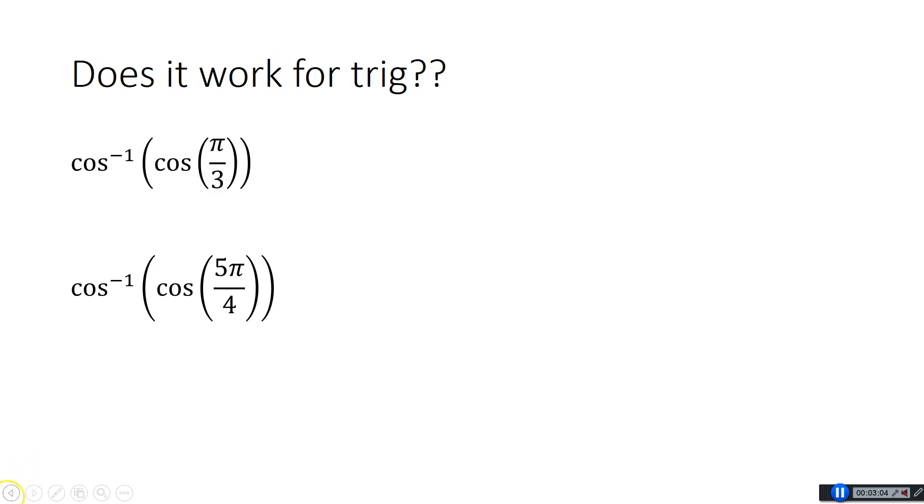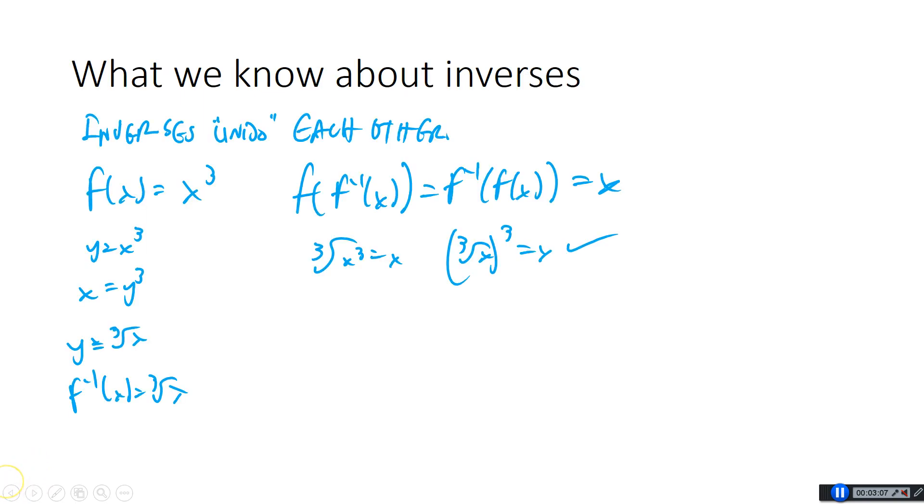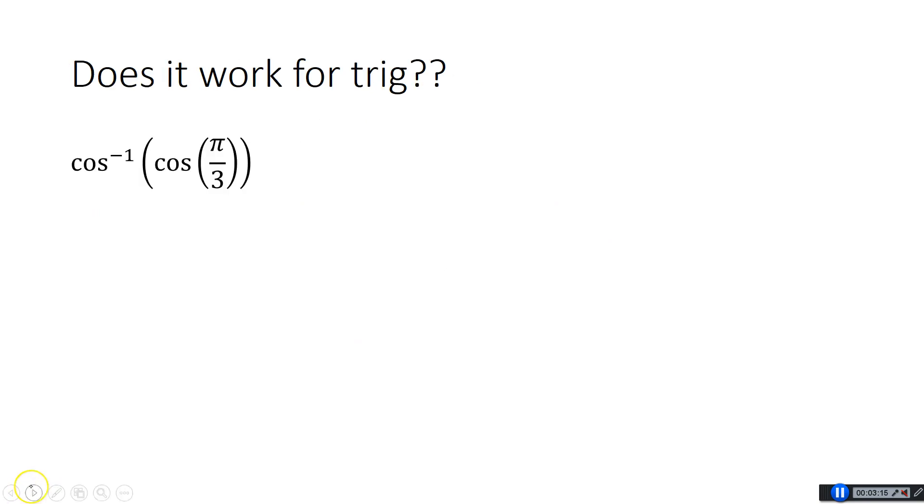The problem with this is that with sine, cosine, and tangent inverse, because we have these restricted domains, this isn't necessarily always going to be true. So let's take a look at some of these problems. The question is, does it work for trig? Just remember to work inside out here. That's the main thing, just work inside out. You learned this back when you first learned function notation. Do the inside function first. So this is going to be cosine inverse of cosine of π over 3. π over 3 is right here. That is 1 half. So it's cosine inverse of 1 half, which is indeed π over 3. Because now we have to think we only use the top half of the circle. That is π over 3. So it works on that one.